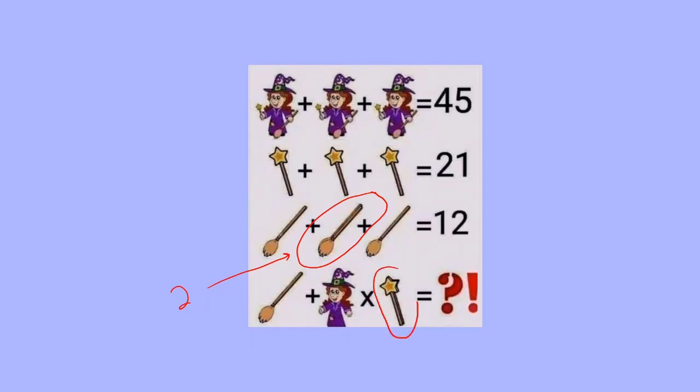Same thing with the wand. So if you look at this, there's actually two wands right here. So that's another thing we need to observe in order to solve this.